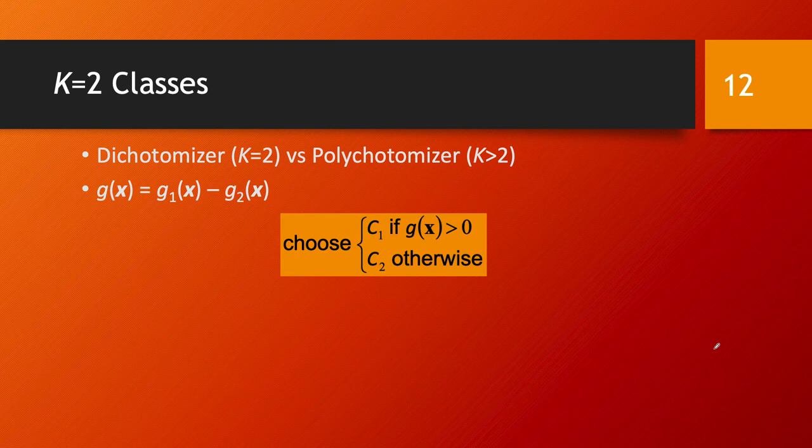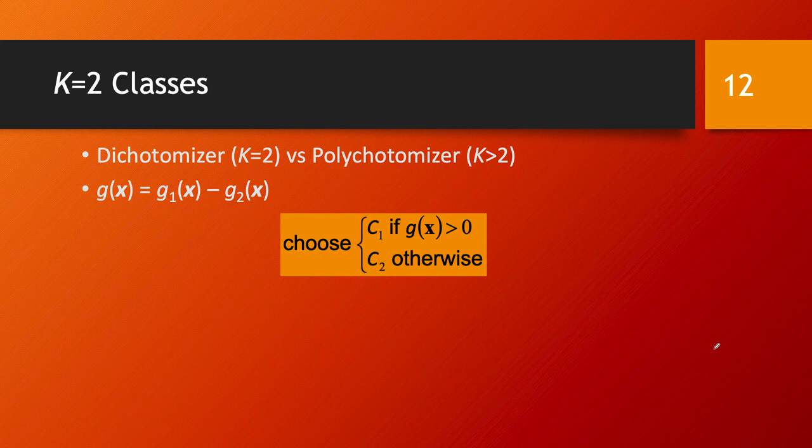In the case we are dealing only with two classes, this is called a dichotomizer in terms of a classifier. If we had more than two classes, this would be a polychotomizer. But in the case of a dichotomizer with only two classes...